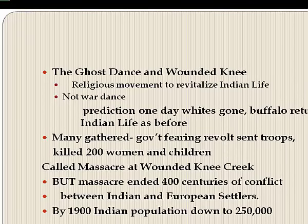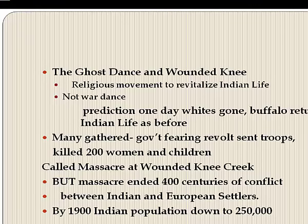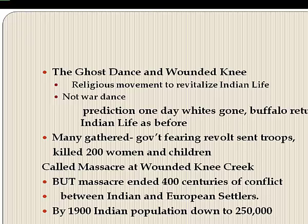In the late 1880s, some Indians practiced the ghost dance — a religious movement to revitalize Indian life, similar to a revival. Ghost dance leaders predicted the white men would disappear, the buffalo would return, and Indians would resume their cultural practices. Large numbers gathered for singing, dancing, and religious ceremonies. The government, fearing revolt, sent troops to the reservation, where they opened fire on ghost dancers, especially at Wounded Knee Creek in South Dakota, killing as many as 200 Indians, mostly women and children. The massacre at Wounded Knee ended four centuries of armed conflict between Native Americans and European settlers.